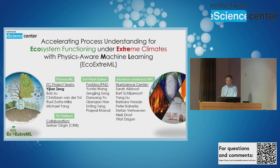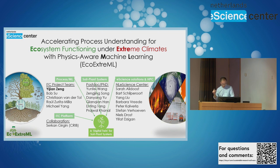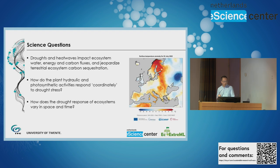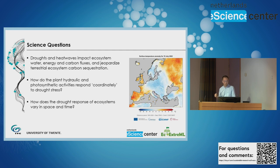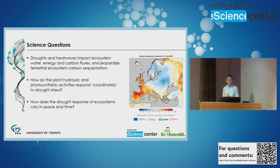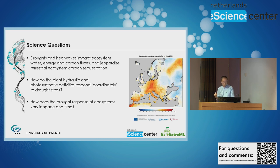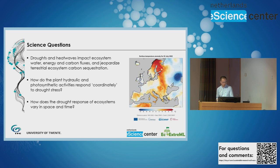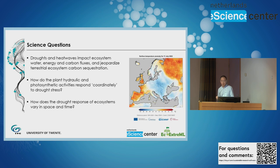All together, we are developing a digital twin for the soil-plant system — not yet for the full earth, but focused on soil and plant. The science question we want to address is: how do droughts and heat waves impact ecosystem functioning in terms of water, energy, and carbon fluxes? We try to understand drought response in terms of plant hydraulics and photosynthetic activities, and also the spatial and temporal evolution of this drought response.